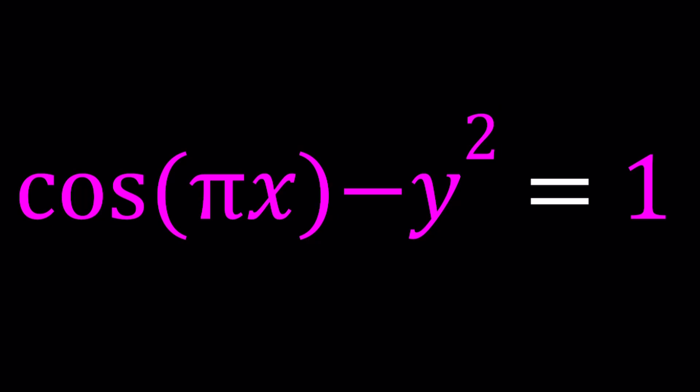First of all, I'm going to go ahead and add y squared to both sides, so we can isolate the parabola and the trigonometric function. And then what is the catch? We're going to solve this problem using inequalities. Here's how it goes.